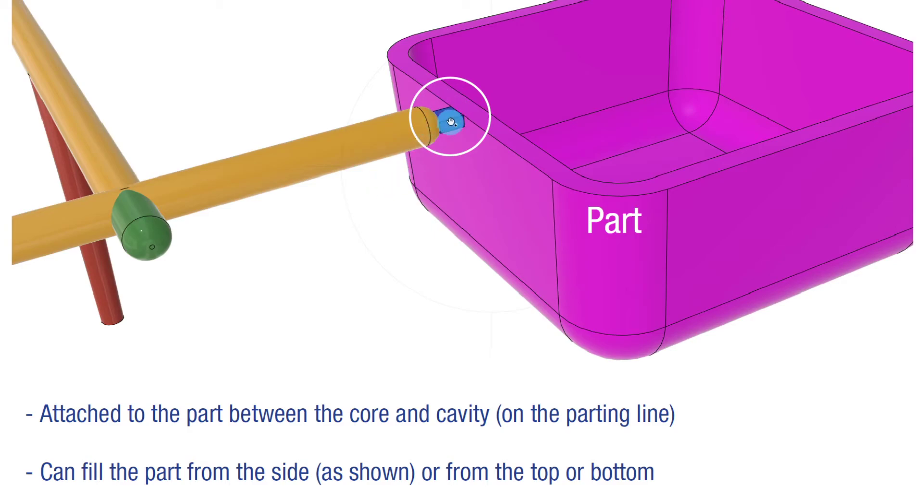The edge gate itself can fill the part either from the side, which is the way I'm showing it, but it can also be on the inside of the part, on the back face of the part. The part can be flipped over, so there's a multitude of ways it can be done, but it's often put right on the parting line.